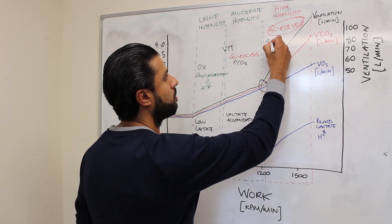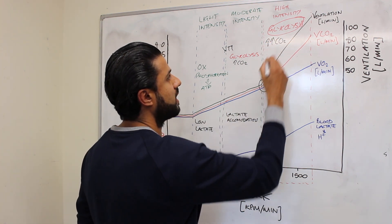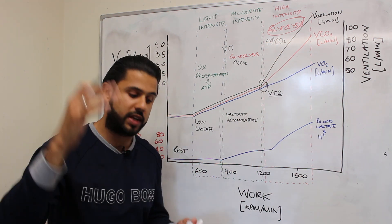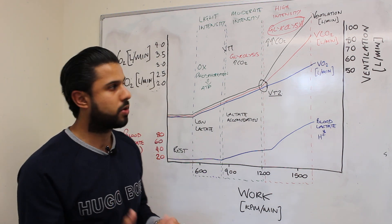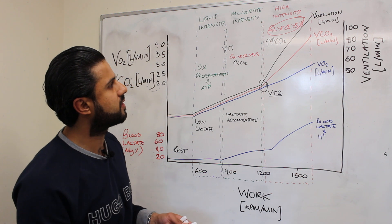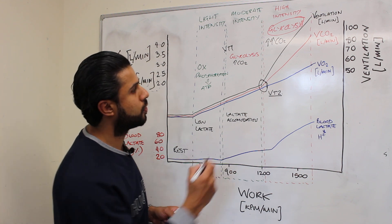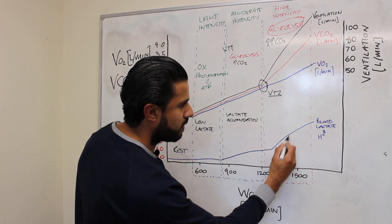I'm going to put two arrows here just to highlight the fact that CO2 levels are going to increase dramatically because it's a waste product or byproduct of glycolysis. So we have an increase in CO2. Now at the same time we have an increase in blood lactate levels as well.